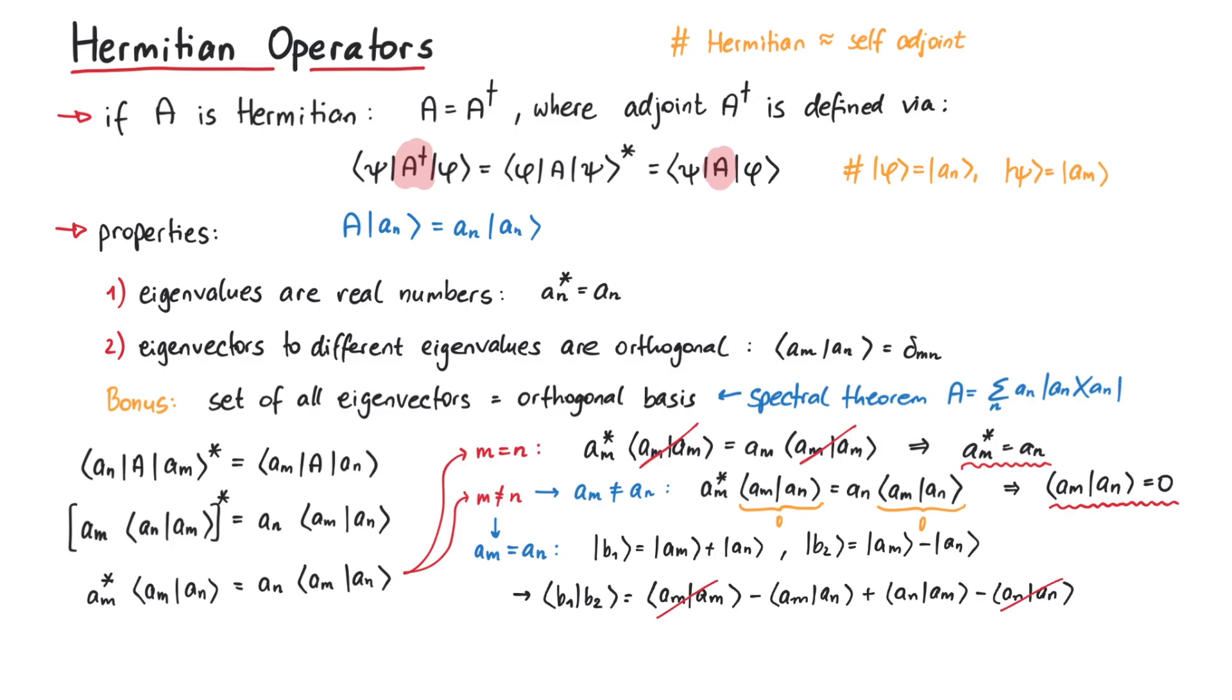For a real inner product, we can just exchange the states and the result is zero. Therefore, the new states b1 and b2 are orthogonal to each other, and by construction also to all other states ak. And that's pretty much it for this video. Thanks for watching.